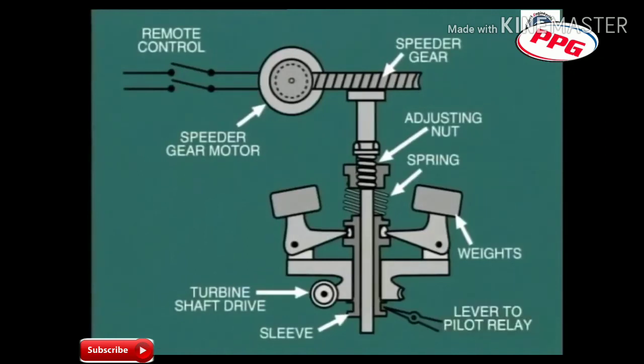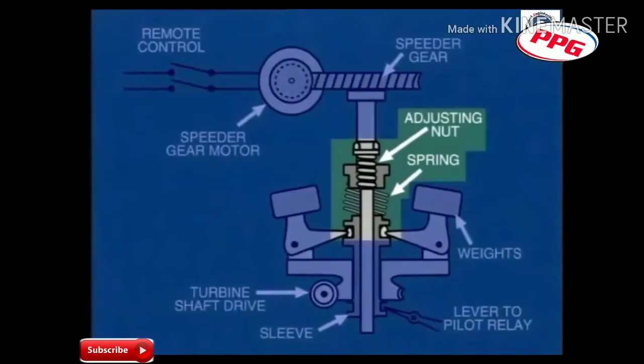We can adjust the set point of the governor by adjusting the compression on the spring. The adjusting nut moves up or down according to rotation of the screw thread.